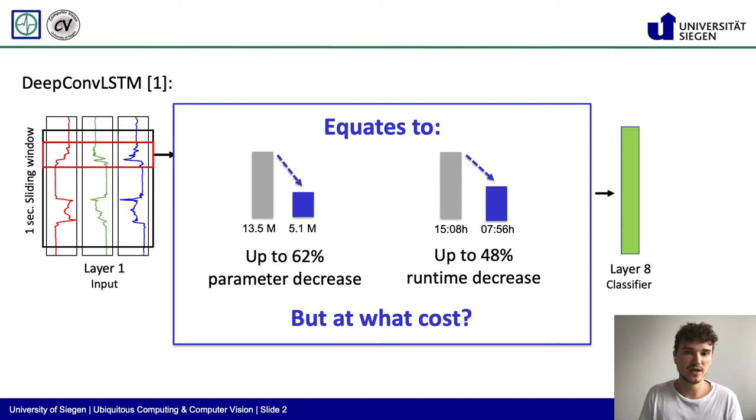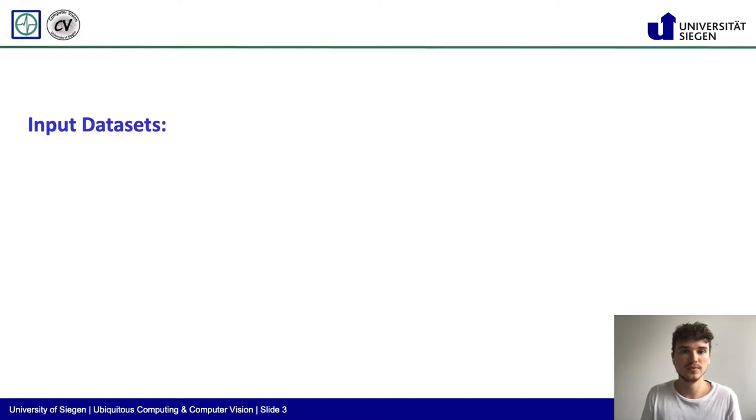Now, you might ask yourself, at what cost does this change come? How much does the simplification hurt the predictive performance of the model? Well, to answer this question, we compared the performance of our architecture to the original DeepConvLSTM architecture using five publicly available human activity recognition datasets as input.